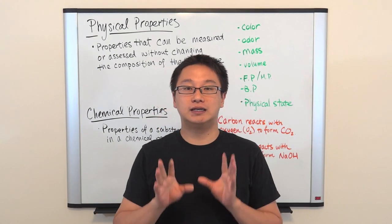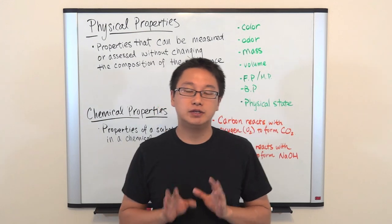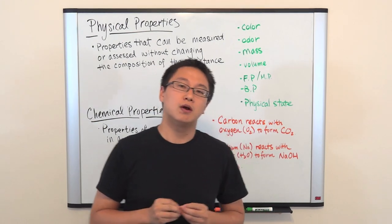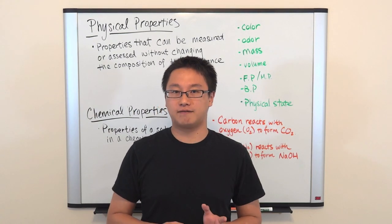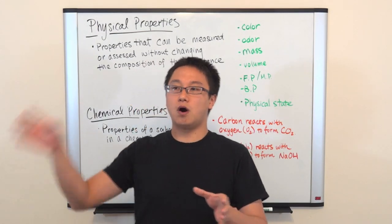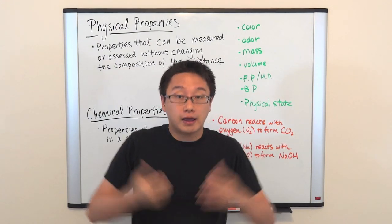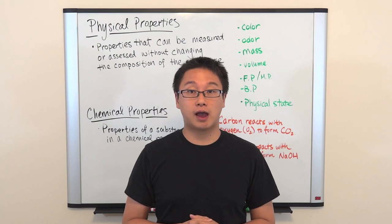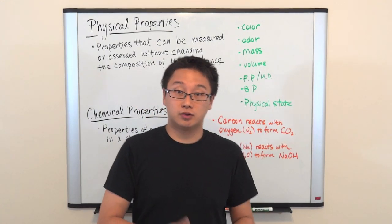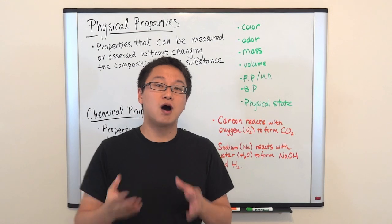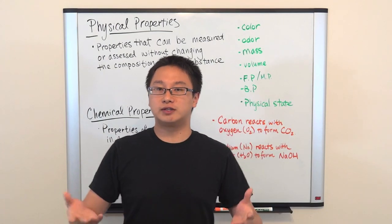Now for mass and volume — we have to pay attention to these two because they depend on the amount of substance we have. For example, if you pour water into a beaker or graduated cylinder and it is 100 milliliters, the volume is 100 mL. If you pour some water out, the volume will be less. So you can see how volume changes with the amount you have.